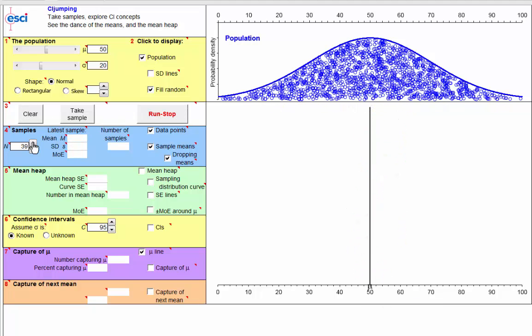I'll now set n to be 60. There we go. And now run this again. Obviously, we have four times as many data points in each sample. And would you agree that the dance of the means is narrower, less frenetic dancing? Is that what you predicted?